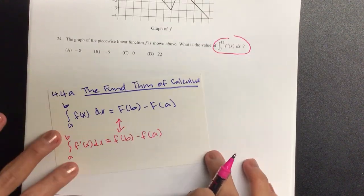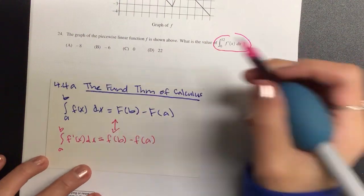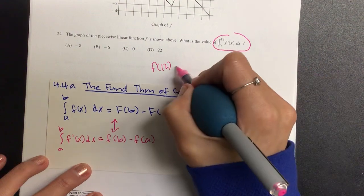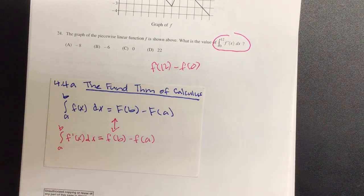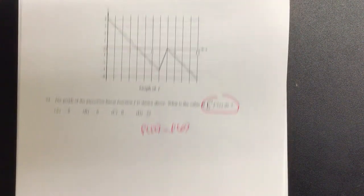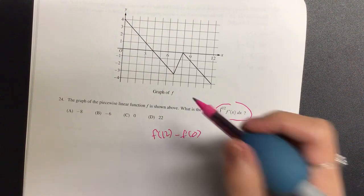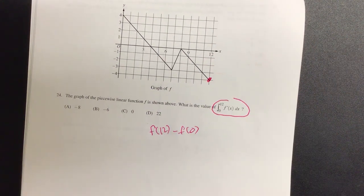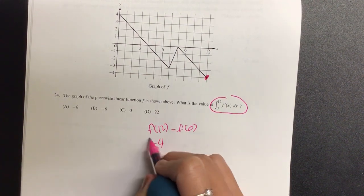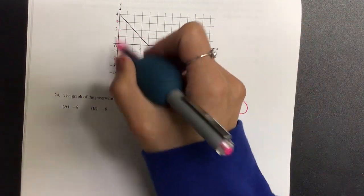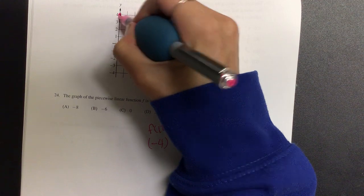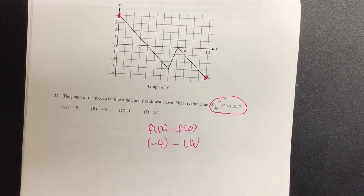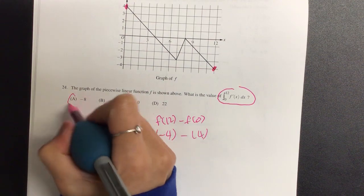So we have integral of that is equal to, we have F of 12 minus F of 0. And all we have to do is look at the graph. When I look at the graph at 12, at 12, what is my value of F? So negative 4. Minus, when F of 0, 0, what's the value? 4. So negative 4 minus 4 is how many? Negative 8. Negative 8, done.